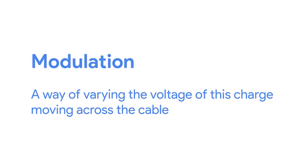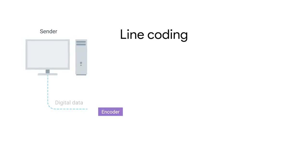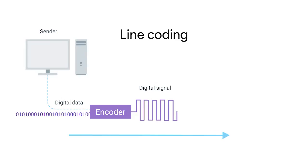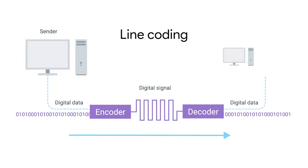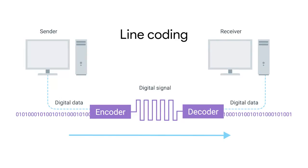Ones and zeros are sent across those network cables through a process called modulation. Modulation is a way of varying the voltage of this charge moving across the cable. When used for computer networks, this kind of modulation is more specifically known as line coding. It allows devices on either end of the link to understand that an electrical charge in a certain state is a zero and another state is a one. Through this seemingly simple technique, modern networks are capable of moving 10 billion ones and zeros across a single network cable every second.